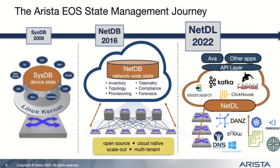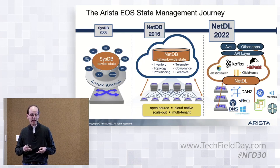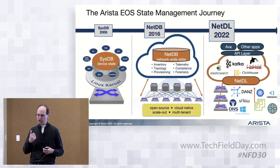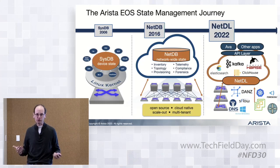Our journey started when we first launched our products in 2008 — switches with a database on board, where the database holds all of the state of the switch in one place using a formal schema, a common set of infrastructure, and common representation across all different switch functions. I'm talking about the configuration — your ACLs, your QoS config, your routing policy. I'm talking about the control plane state, the ARPs and neighbors you've learned, the RIB and FIB, IGMP snooping entries. I'm talking about hardware state: temperatures, power supplies, voltages, fan speeds, transceivers, optics, digital optical monitoring parameters. Getting all of that data into one database let us build a more reliable switch operating system.